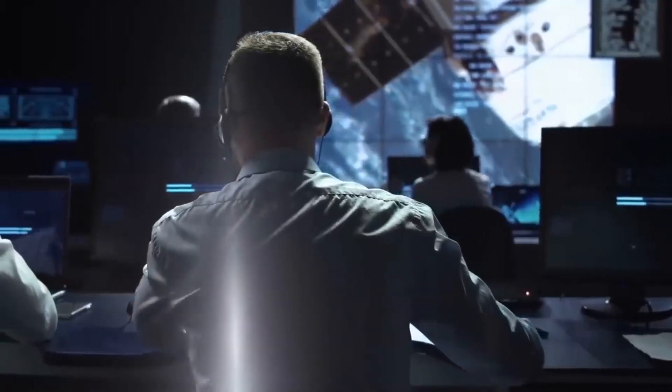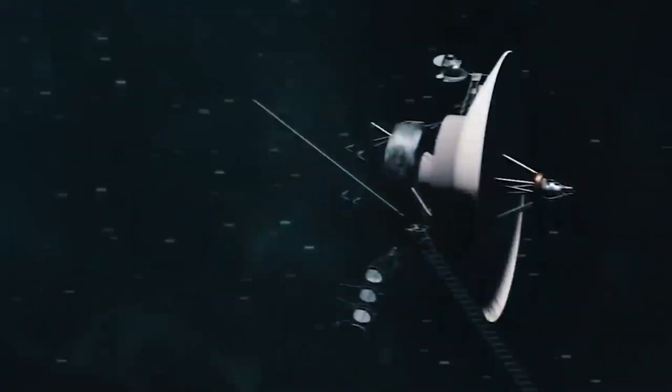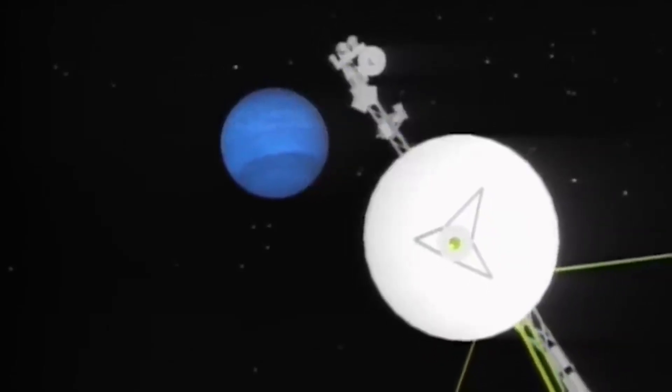One had a wide-angle lens for taking detailed pictures of the planets as the probe approached them. The other, which was zoomed in, had a narrow-angle lens that allowed it to view each planet in greater detail